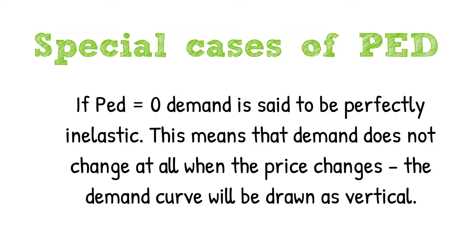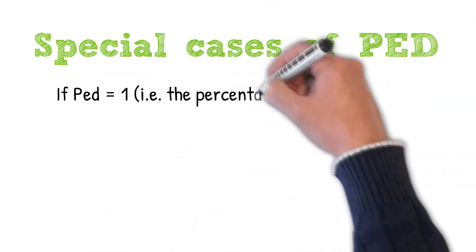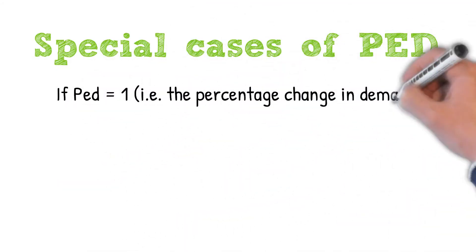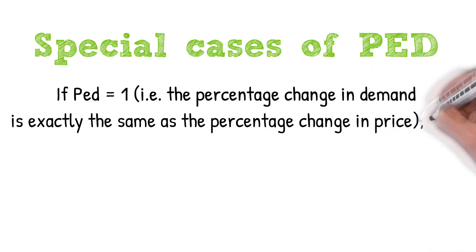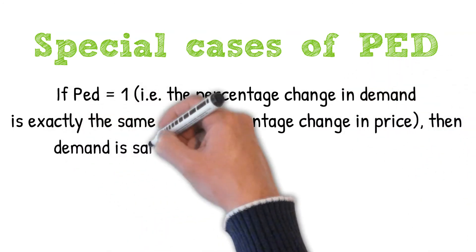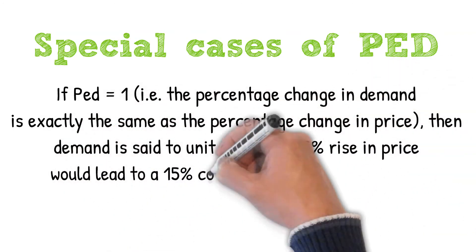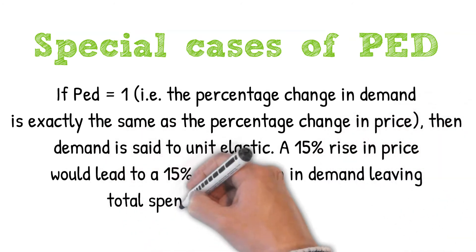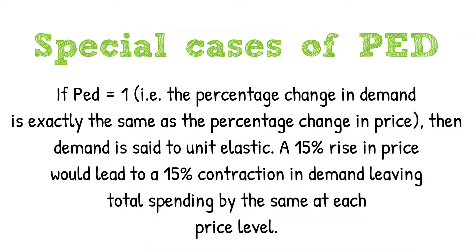Imagine tickets to a concert where the quantity is limited — that is an example of perfectly inelastic demand. If PED equals 1, demand is said to be unit elastic. A 15% rise in price would lead to a 15% contraction in demand, leaving total spending the same at each price level.